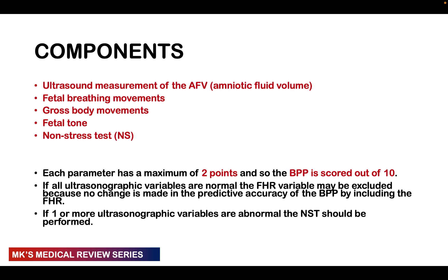The biophysical profile predominantly has five components: measurement of the amniotic fluid volume, fetal breathing movements, gross body movements, fetal tone, and the non-stress test or fetal heart rate. Each parameter is given a maximum score of two, meaning the maximum total score is 10 out of 10. If the ultrasonographic variables are normal and the fetal heart rate is variable, the fetal heart rate can be excluded as it won't change predictive accuracy. But if one or more other parameters are abnormal, you must do the non-stress test and check if the fetal heart rate is reactive or non-reactive.